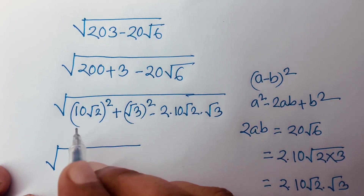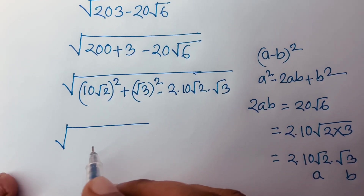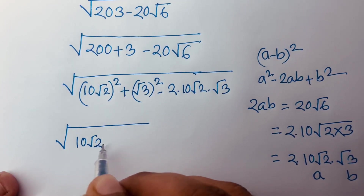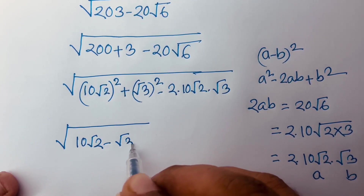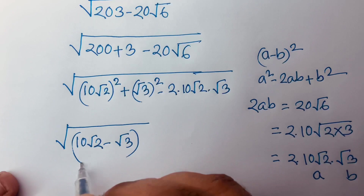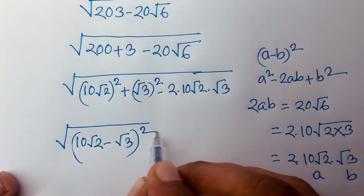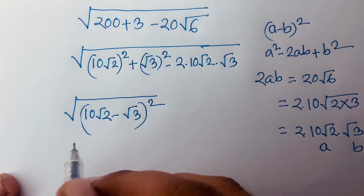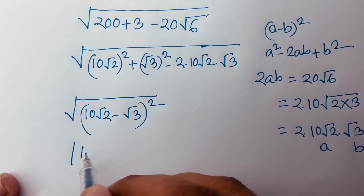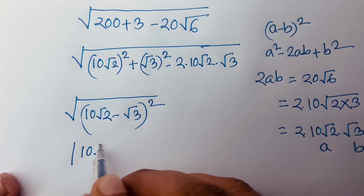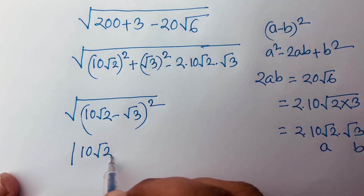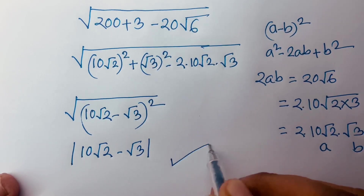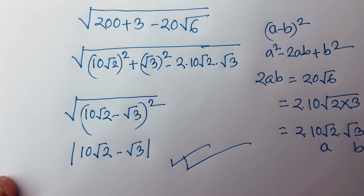So in this case, we have (10 square root 2 minus square root 3) whole square. Then the square root is cancelled, and our final answer is 10 square root 2 minus square root 3.